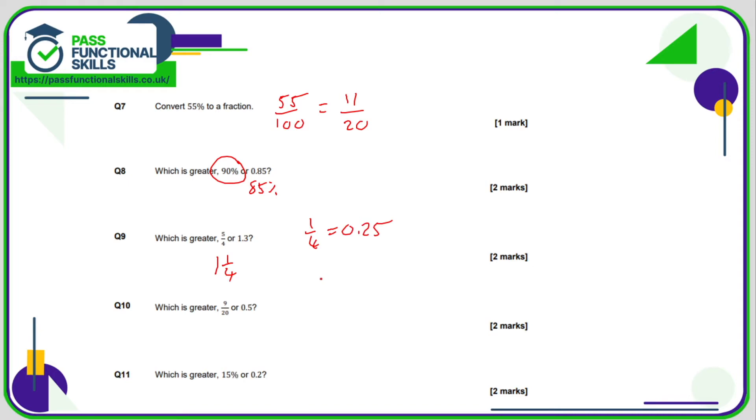So we're comparing 1.25 and 1.3. And if you're struggling because you're a bit confused because there's two numbers here and there's only one here, then put a 0 to make this 1.30. You've not changed its value, but maybe it's now a bit more obvious that this is greater.